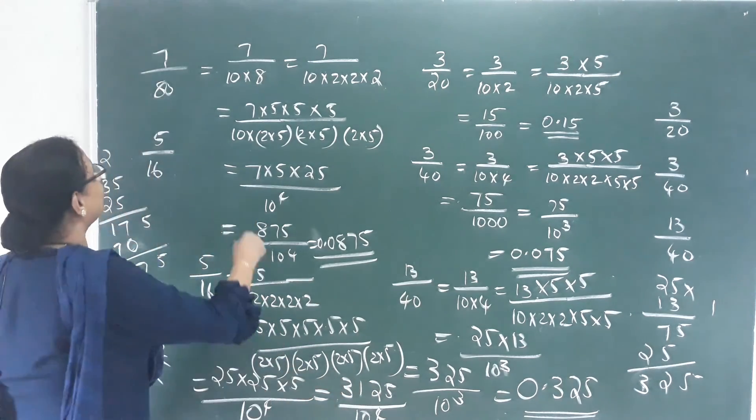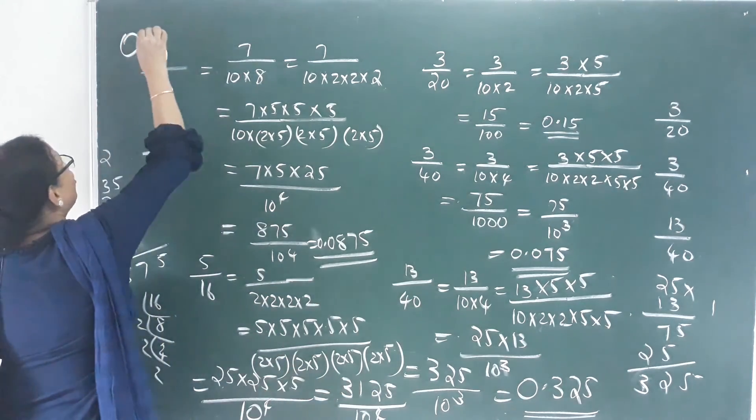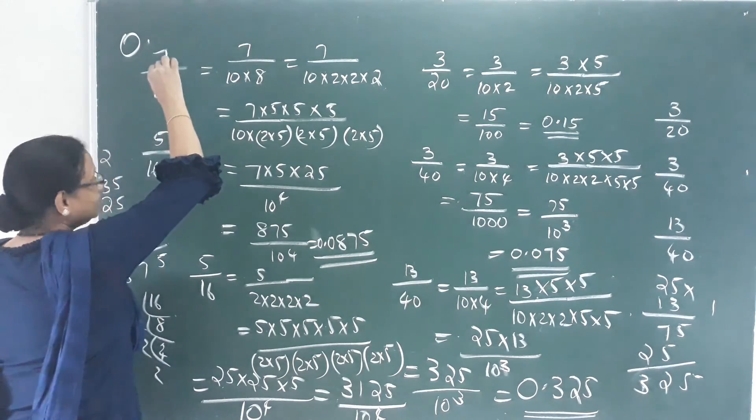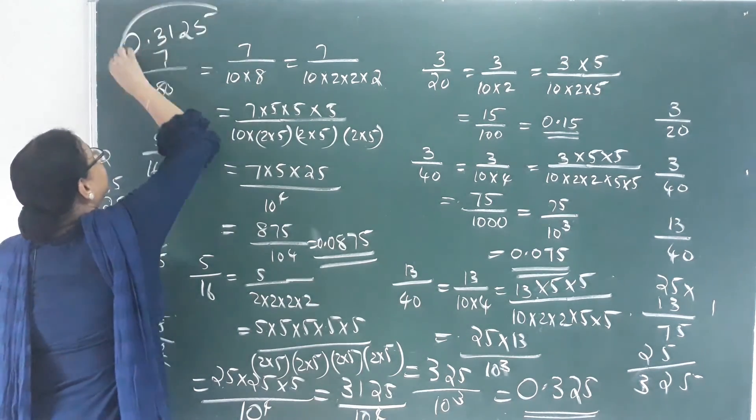Four decimal places — now 0 point 3, 1, 2, 5. So 5 by 16 equals 0.3125.